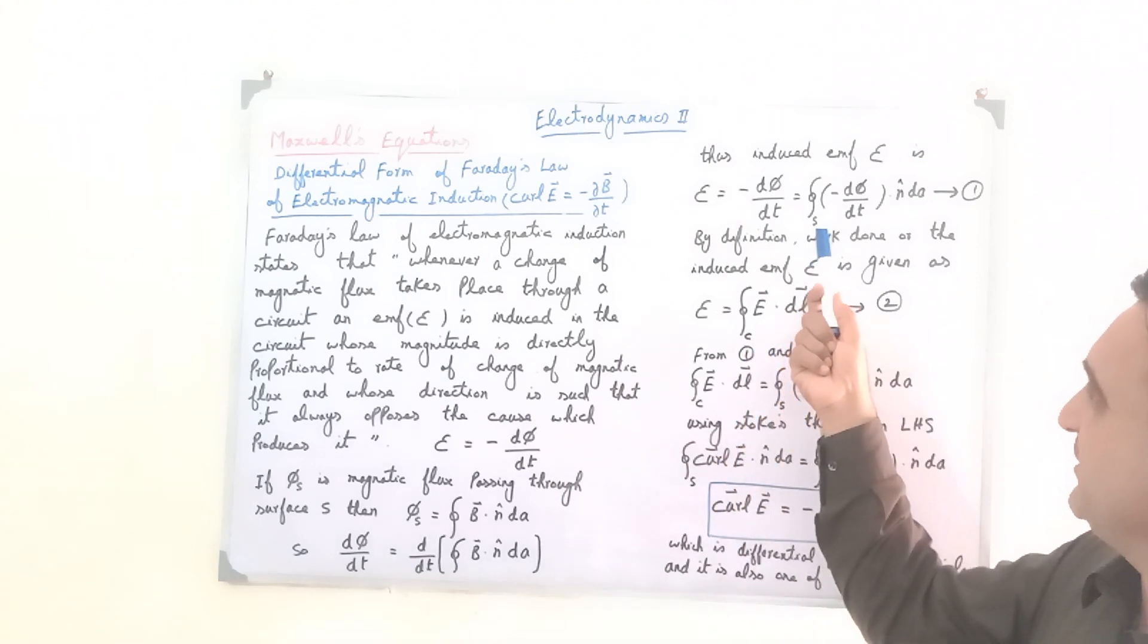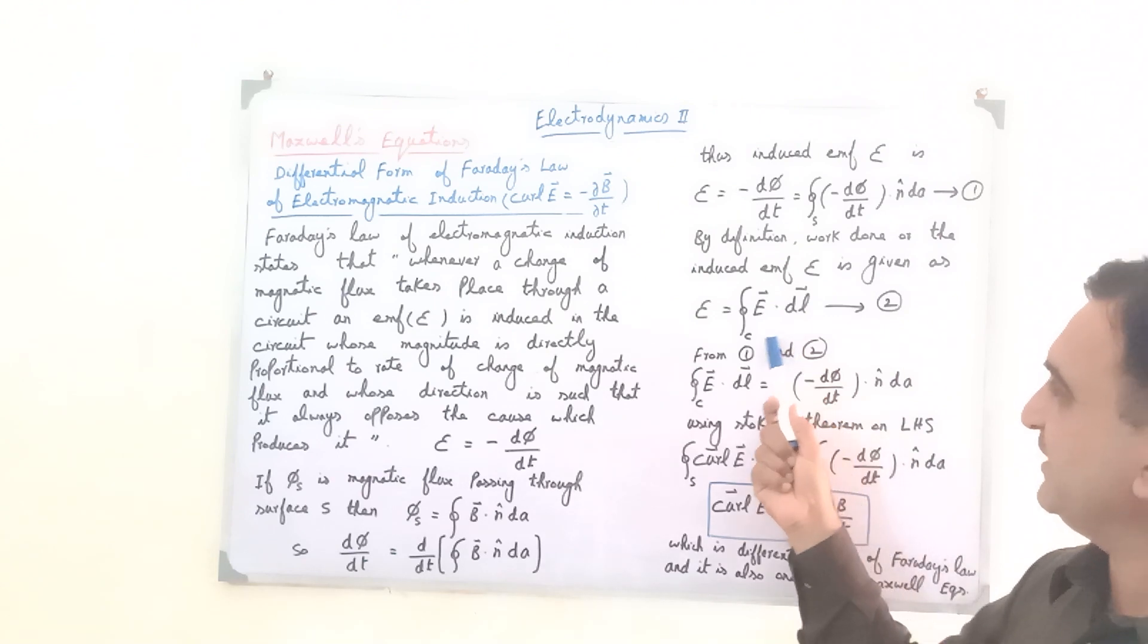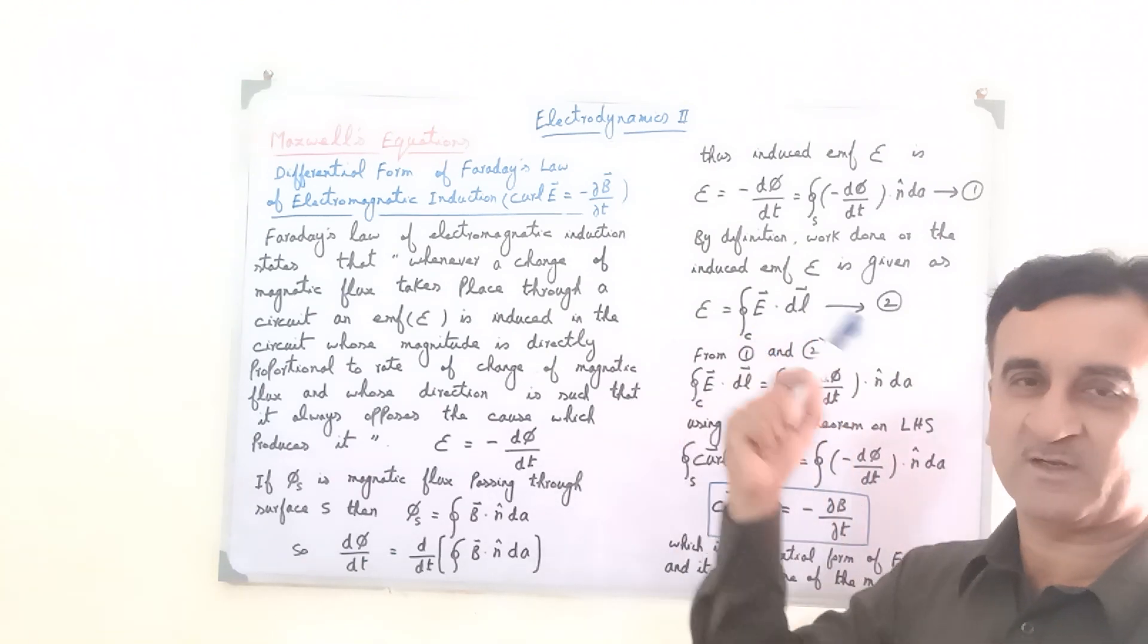But in equation number 1 we have used a surface integral. In equation number 2 it's a line integral over a closed curve C.